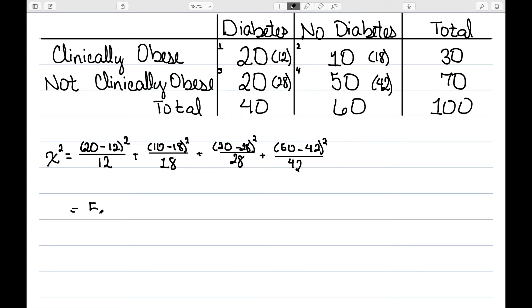As we work these out, this is 5.22 plus 2.29 plus 3.56 plus 1.52. So my test statistic, I add these all up to get a total test statistic of 12.7.